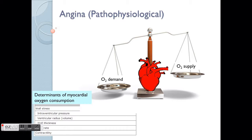There are a few determinants of myocardial oxygen consumption. One includes wall stress — meaning how much the heart is being stretched. Because the heart has the ability to stretch, it's a little bit like water filled into a balloon. The more the stretch, the greater the pressure.